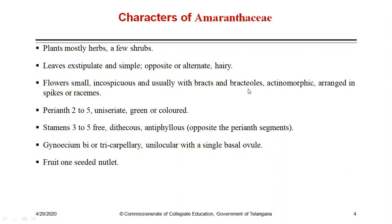Bracts and bracteoles are present but modified as scales. Flowers are actinomorphic. The usual inflorescence is a spike, sometimes a racemose inflorescence. The perianth is arranged in a single whorl, so it is called monochlamideous. Perianth contains 2 to 5 tepals and they are uniseriate, green or colored. Stamens are 3 to 5. In Achyranthes, 10 stamens are found and dithecous condition is observed. Stamens show antiphyllous condition — they are arranged opposite to the perianth segments.